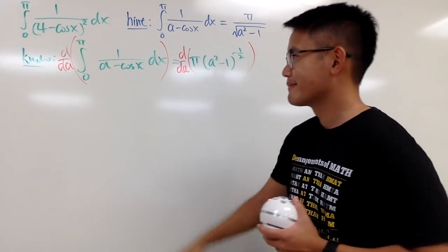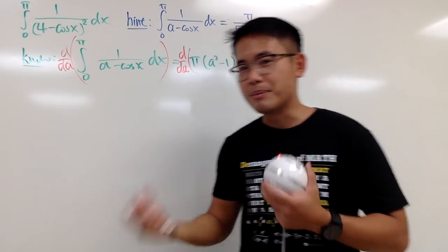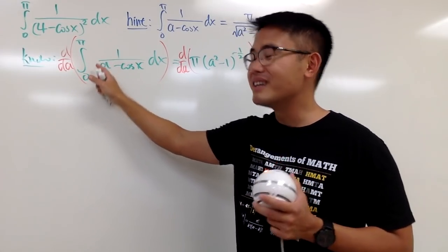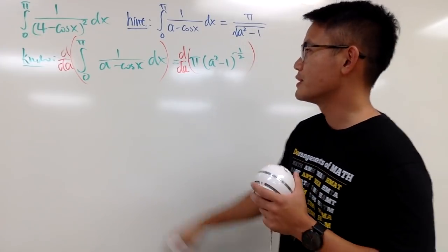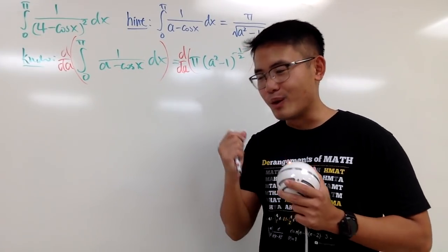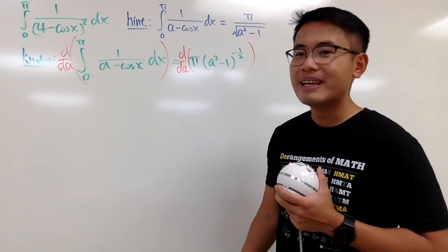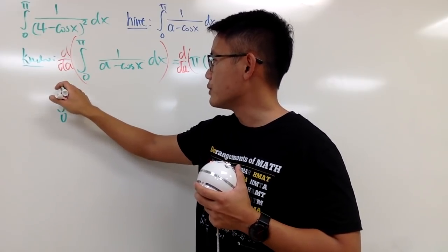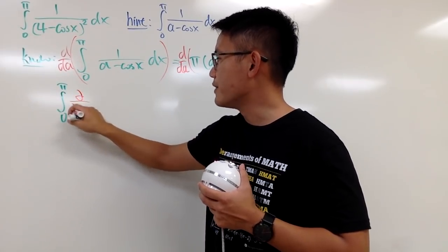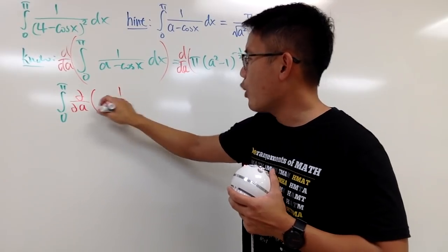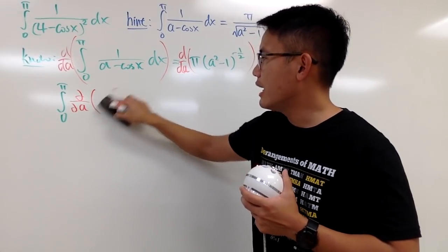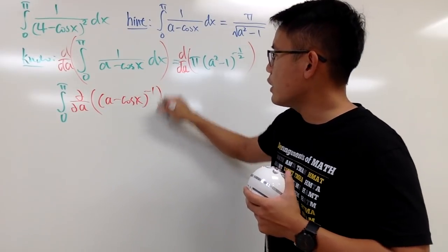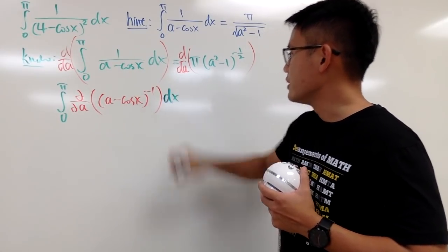But, here's the deal. When you differentiate an integral, you have to use the Leibniz rule. It's actually not that bad. But, you pretty much bring this in and change that to partial derivative. Because, inside of this integral, you technically have two variables, namely the a and x. You have to know what you are differentiating with respect to. So, if you would like, you can write it down again. This is the same as an integral from 0 to pi. Bring this in. You are talking about the partial derivative with respect to a of 1 over a minus cos x. And, I will write this as (a minus cos x) raised to the negative 1 power. And then, the dx is at the end right here.